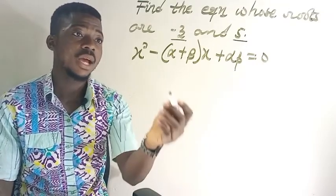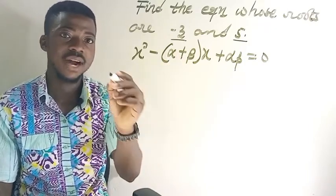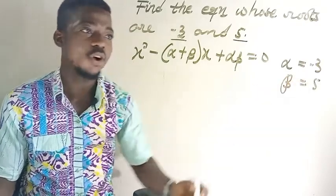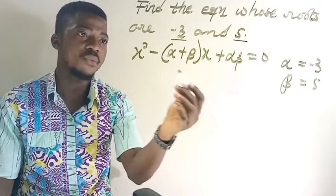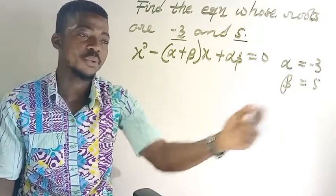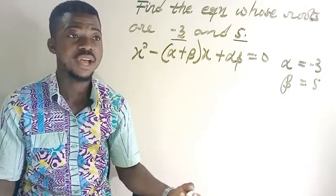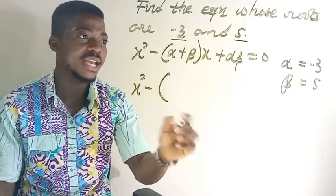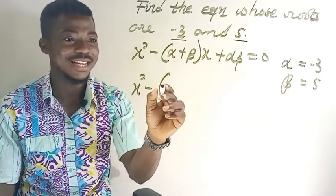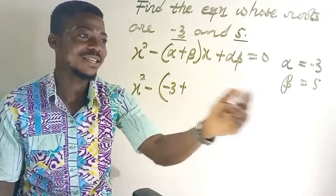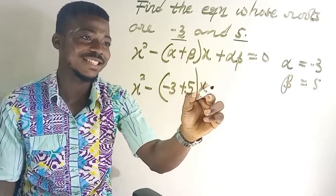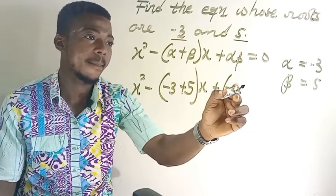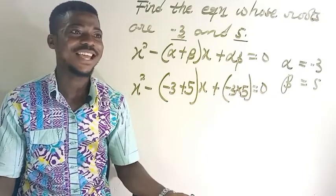In this case alpha is -3 and beta is 5. We substitute those into the control equation: wherever we see alpha we put -3, and wherever we see beta we put 5. So we get: x² − (−3 + 5)x + (−3 × 5) = 0.